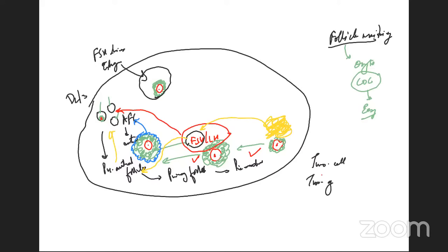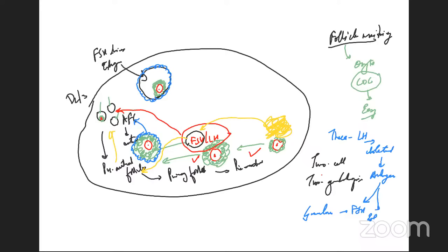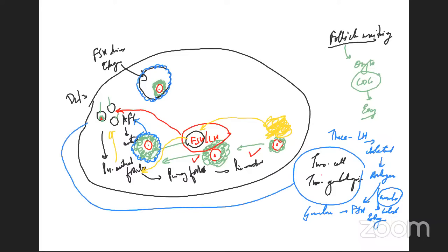I'm sure all of us understand the two-cell two-gonadotropin theory. The theca cells, which come from the ovarian stroma, express LH receptors, allowing cholesterol from the blood to be converted into androgen. This androgen migrates into the granulosa cell, which has FSH receptors that convert androgen into estrogen through aromatase activity. This is also the basis of using letrozole.